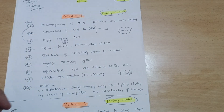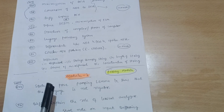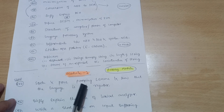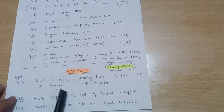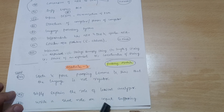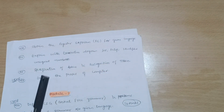These three passing modules should be your top-most priority. Focus on these three modules first so that you will be on the safer side and avoid backlogs. Module 2 is also a passing module, in which you have to cover derivation — the most important being: state and prove the Pumping Lemma and show that the language is not regular. Briefly explain the role of the lexical analyzer and write a short note on input buffering.